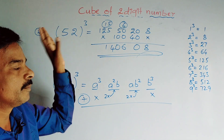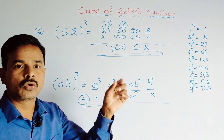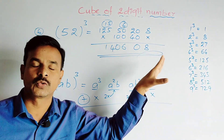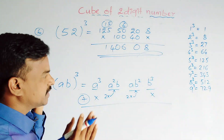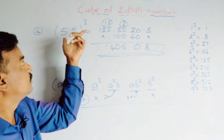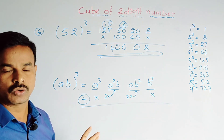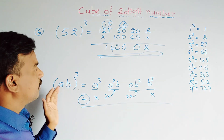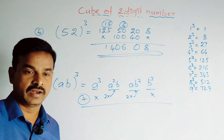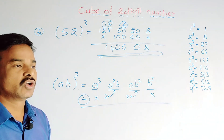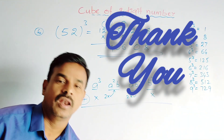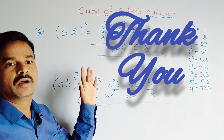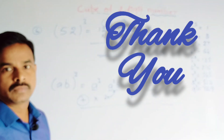This formula you have to keep in mind. To do this, we compulsory need to know the cubes and squares of 1 to 9. After practicing some problems, we can do these types of cubes in 2 to 5 seconds only. Thank you for watching this video. Please subscribe to our channel and click on the bell symbol to get new videos. Thank you.